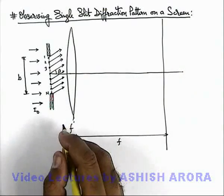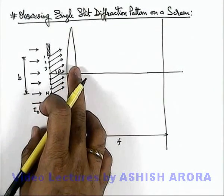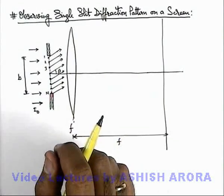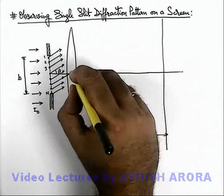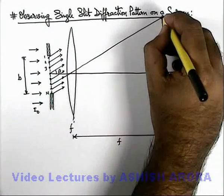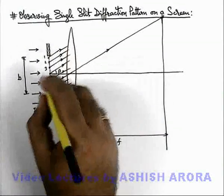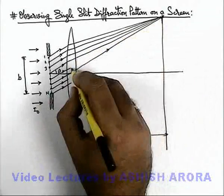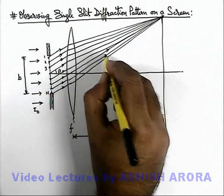Now in this situation when parallel light rays will incident onto the lens, without introducing any path difference the lens will converge all these parallel rays onto a point which will lie in the focal plane of the lens. The light ray passing through the optic centre of the lens will be going as it is and this is the point where the light rays are going to converge. These all light rays are going to converge at this point which is in the focal plane of the lens.